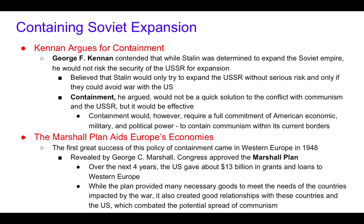The first great success of containment came in Western Europe in 1948. Revealed by George C. Marshall, Congress approved the Marshall Plan. Over the next four years, the United States gave about $13 billion in grants and loans to Western Europe. The plan was to provide necessary goods to meet the needs of countries impacted by the war, foster good relationships with those countries, and prevent them from taking grants and loans from communist countries.